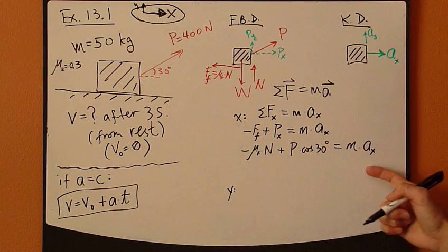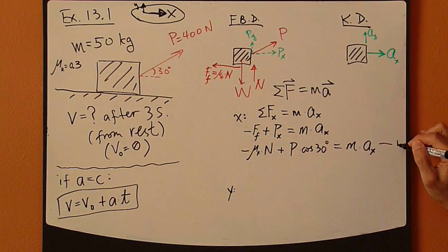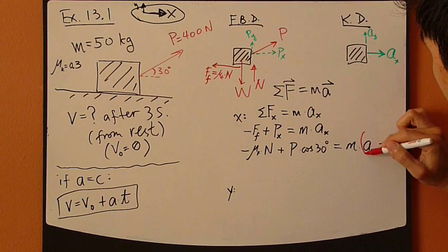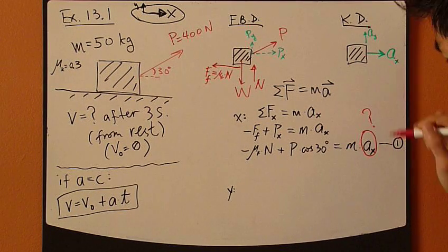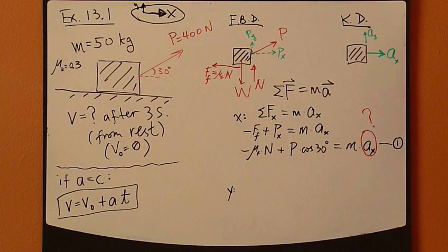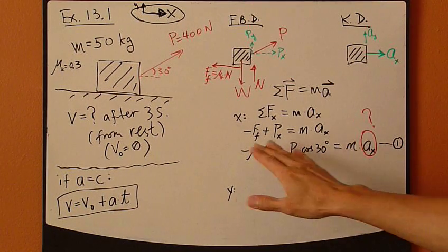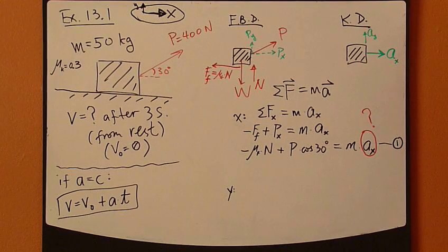So here we have equation one, where AX is the unknown. Meaning that everything else has to be found somehow. Well, let's try to find it.